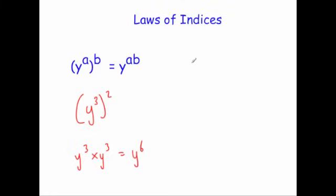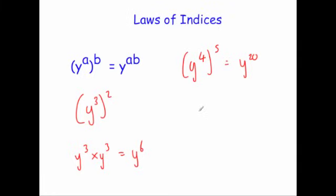For example, y to the power of 4, all to the power of 5, gives y to the power of 20 — multiply 4 times 5. You could also have a to the power of 4, all to the power of minus 2. Multiply the powers together: 4 times minus 2 gives a to the power of minus 8.